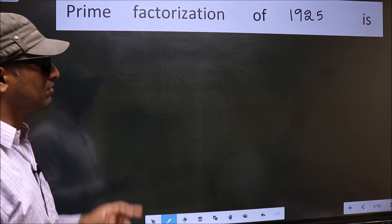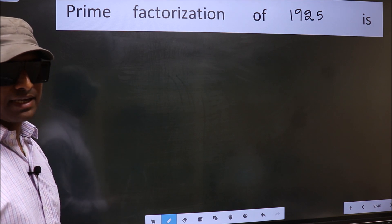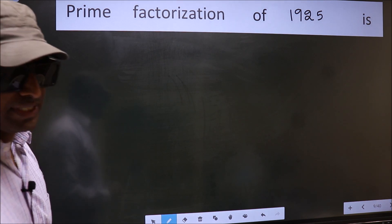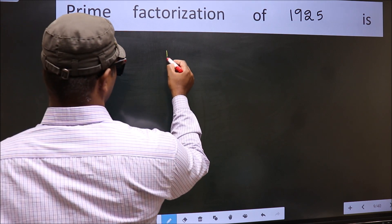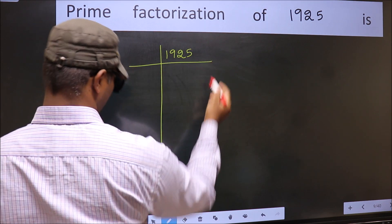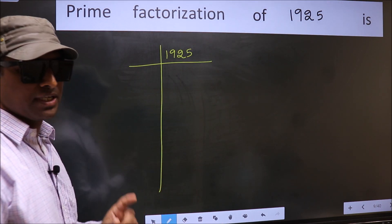Prime Factorization of 1925. To do Prime Factorization, first we should frame it in this way. 1925. This is your step 1.